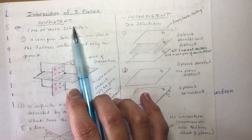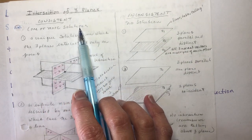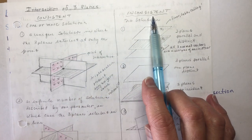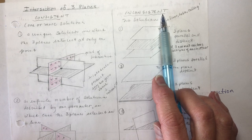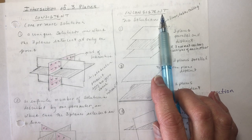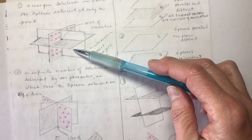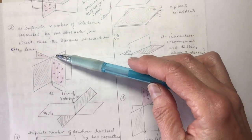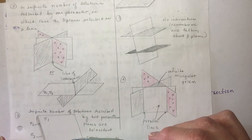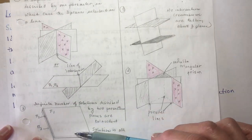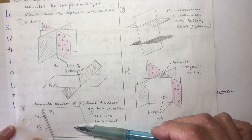We talked about the difference between consistent solutions and inconsistent. When we have a consistent solution, it means the three planes will intersect somehow. Inconsistent, we can still have intersections of two of the planes, but not three of them. In the consistent, we had a single point of intersection, we had a line of intersection, and we had an infinite number of solutions where we had two planes or three planes all on top of one another.